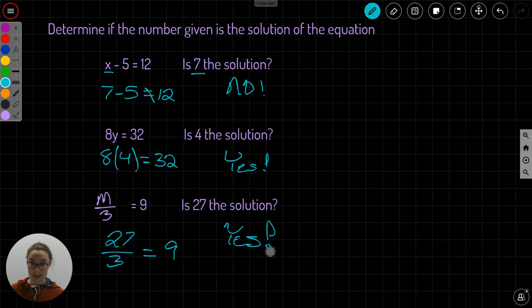Don't overcomplicate this. It's really this simple. You're just plugging in the number for the letter and checking if it's a true statement. Yes or no. Some of them are going to be no, some yes. That's it. That's really all it is.